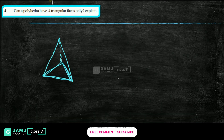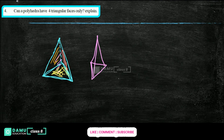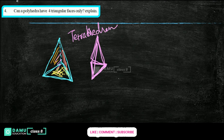Yes, it can be possible with 4 triangular faces. This is face 1, this is face 2, this is face 3, and we can draw another side — then another side, and a front side too. Is it possible to draw a triangular shape like this? Yes, it is possible with 4 triangular faces. This shape is called a tetrahedron.